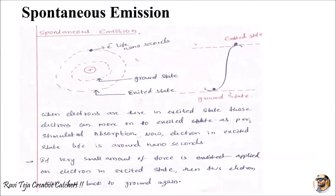Now the electrons are in the excited state. The same concept is shown here in graphical form — the electron present in the ground state, due to the addition of photon light, has gained energy and moved to the excited state. When the electrons are in the excited state, they will stay there for only a few nanoseconds.